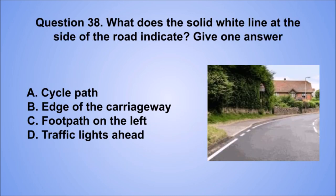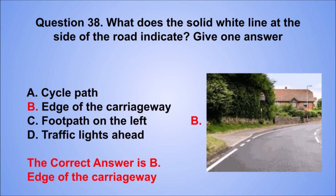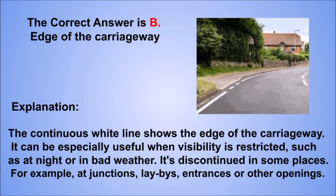Question 38. What does the solid white line at the side of the road indicate? Give one answer. A. Cycle path. B. Edge of the carriageway. C. Footpath on the left. D. Traffic lights ahead. The correct answer is B, edge of the carriageway. The continuous white line shows the edge of the carriageway. It can be especially useful when visibility is restricted, such as at night or in bad weather. It's discontinued in some places, for example, at junctions, lay-bys, entrances or other openings.